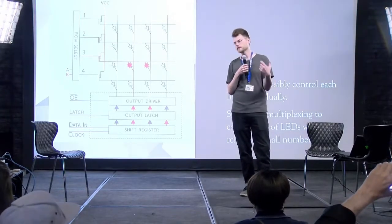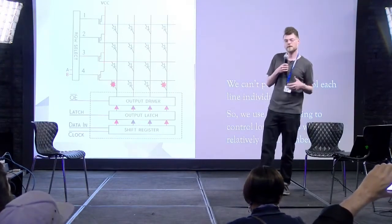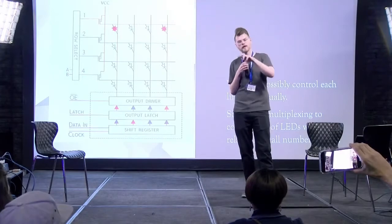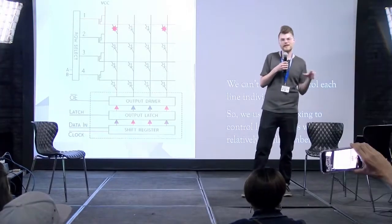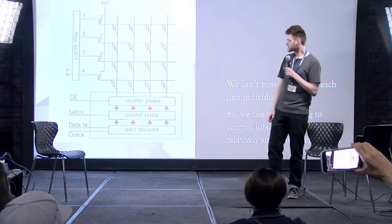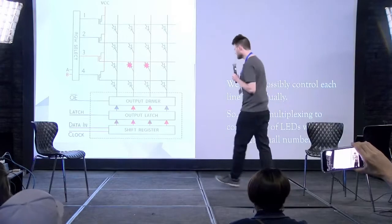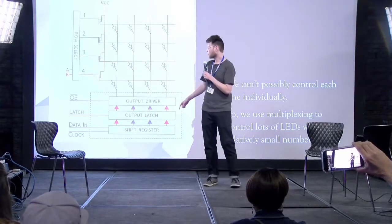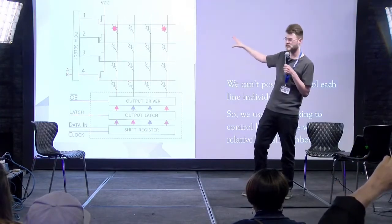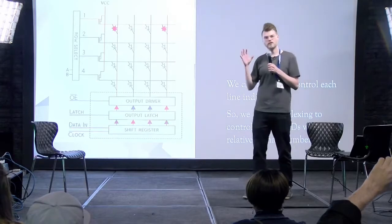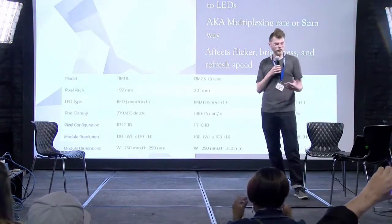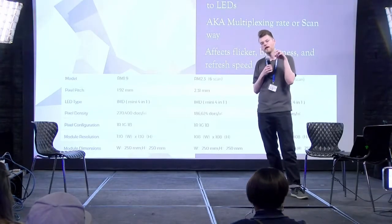We use FPGAs — field programmable gate arrays — which are basically programmable hardware, so you can control sections of the screen in parallel. Looking at this animated GIF, you can see it's scanning row by row. There's a ratio: one chip controlling a certain number of LEDs — 16 in this case. This is described as the scan rate, sometimes called the multiplexing rate or scan way — the ratio of LED drivers to LEDs within the panel circuitry.